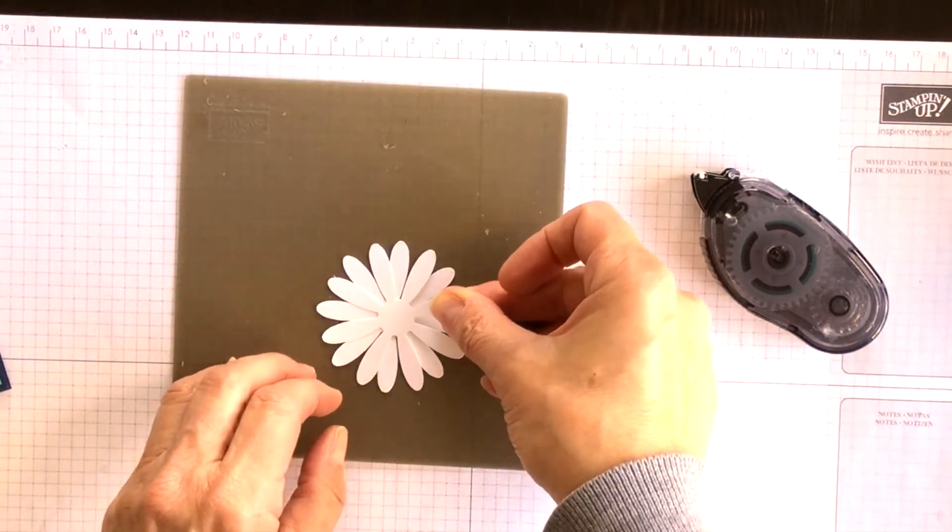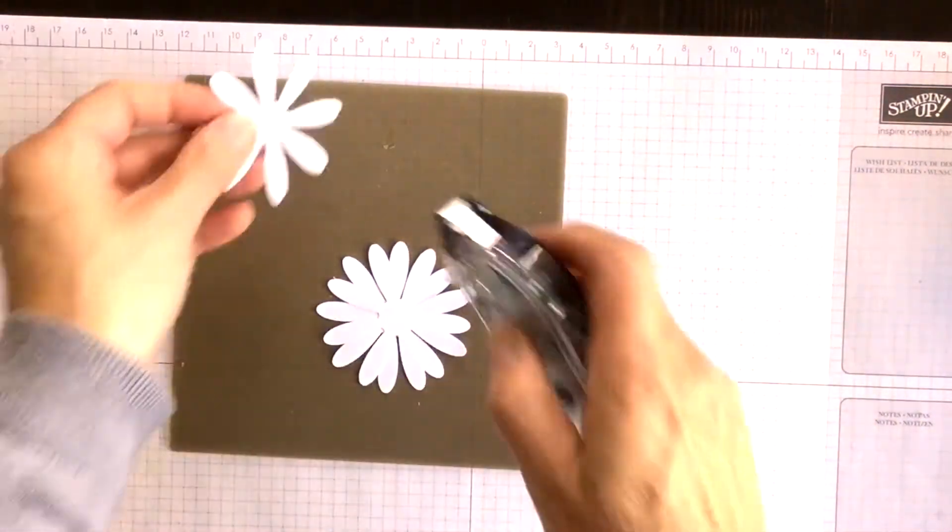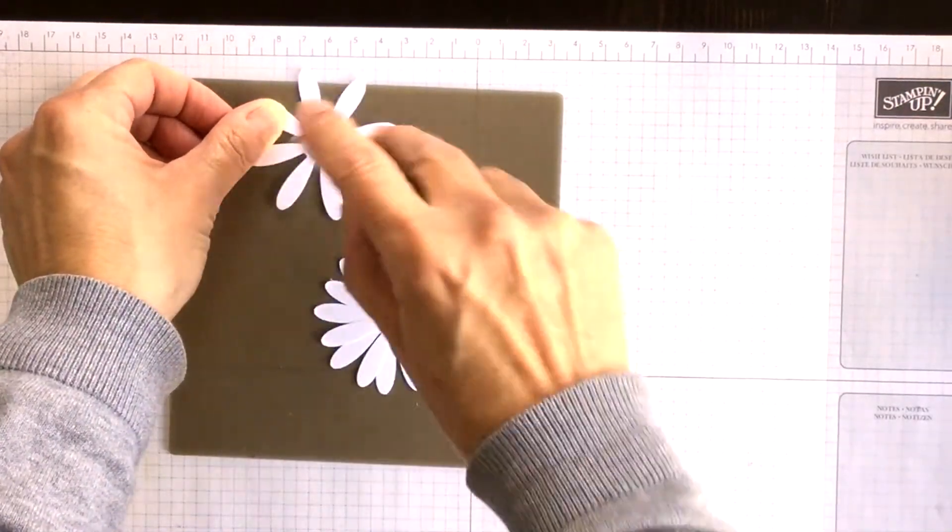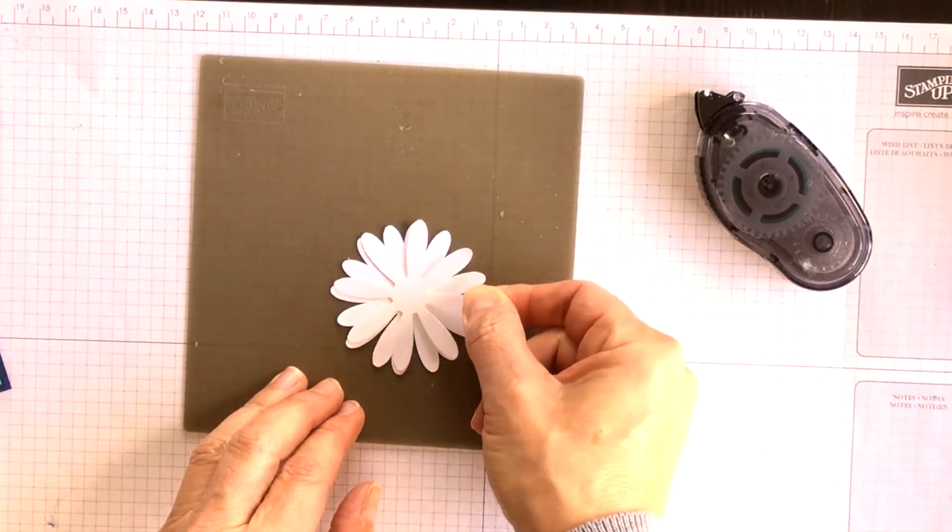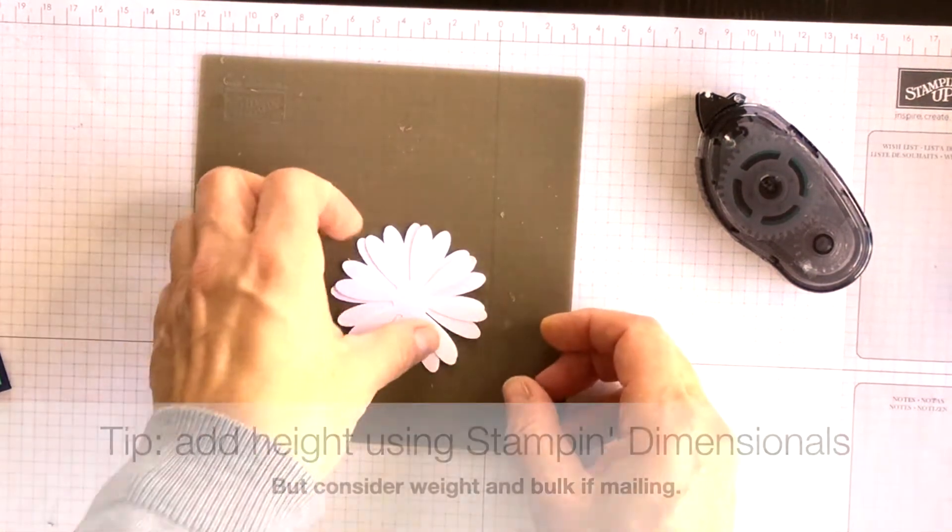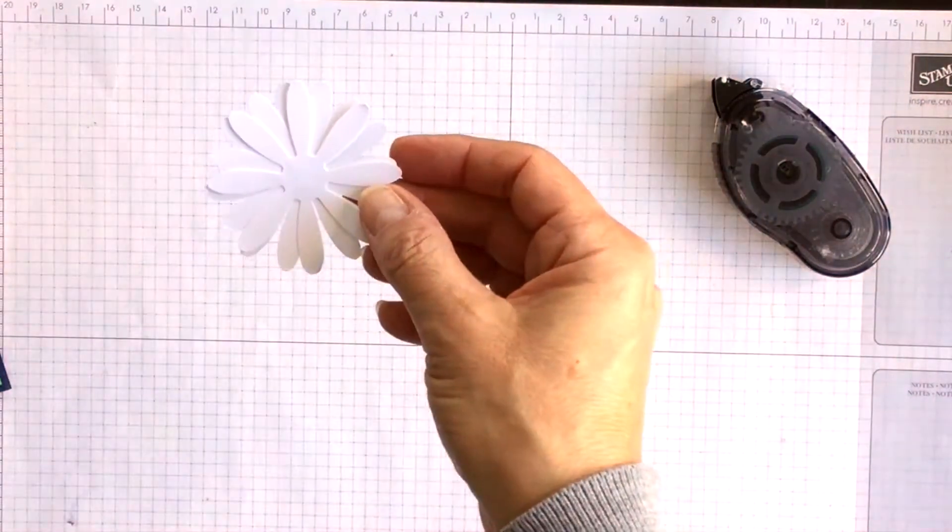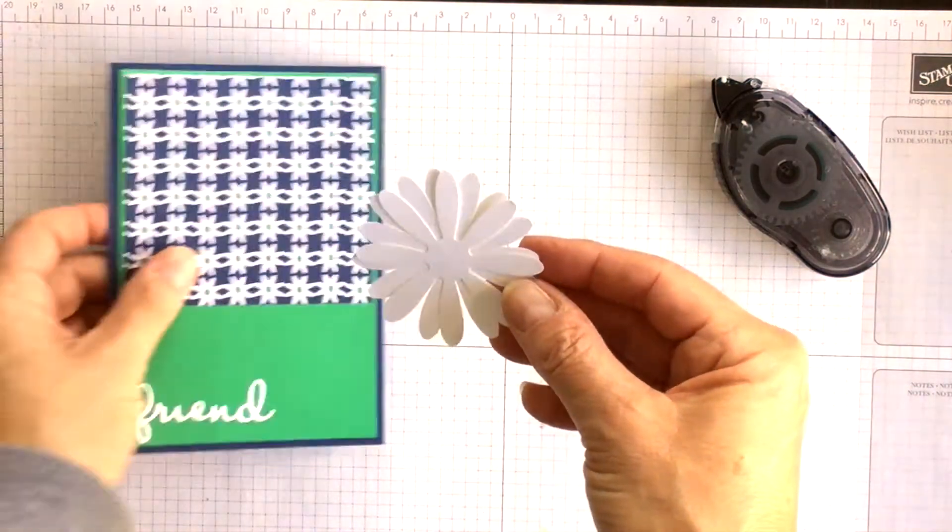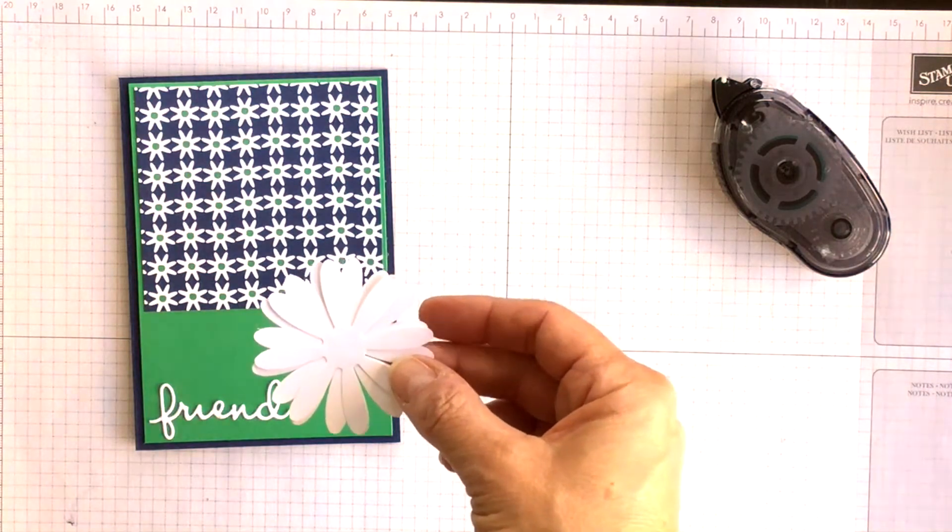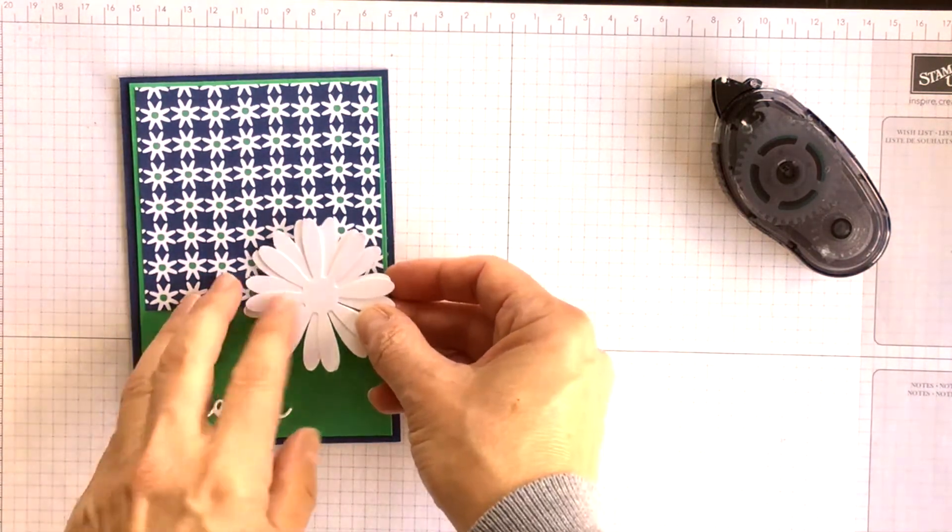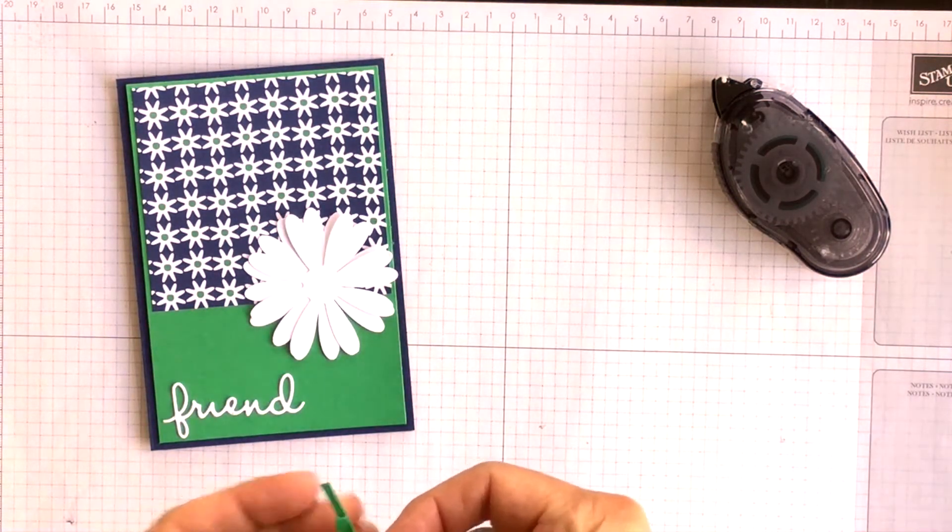And so I'm just going to countersink, I guess that's what it's called, countersink my daisies so that they layer up nicely. If you wanted to add a little bit of height you could do so by adding a Stampin' Dimensional. If I wasn't going to mail my card I probably would use a Stampin' Dimensional in between each layer just to give it height off the front of my card, but that also adds bulk and weight to my card so since I'm going to be mailing mine I didn't want to do that.